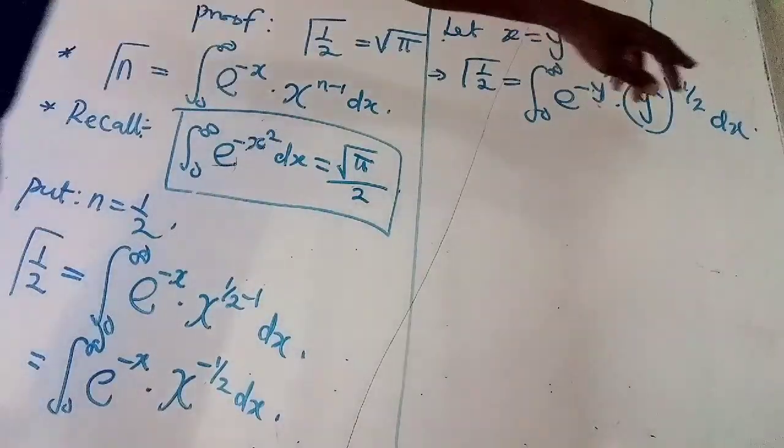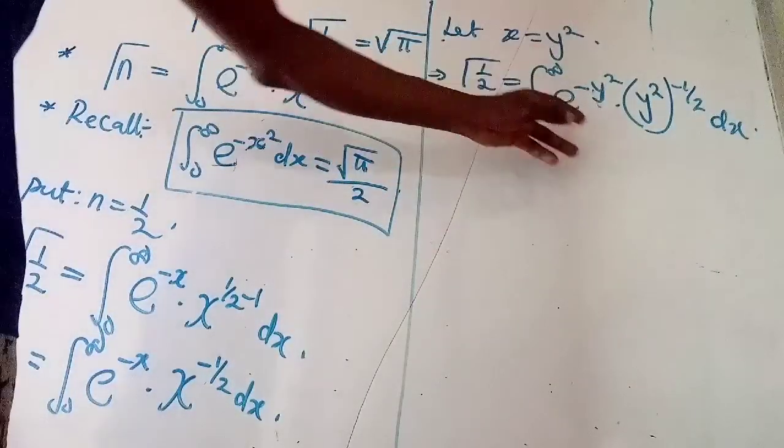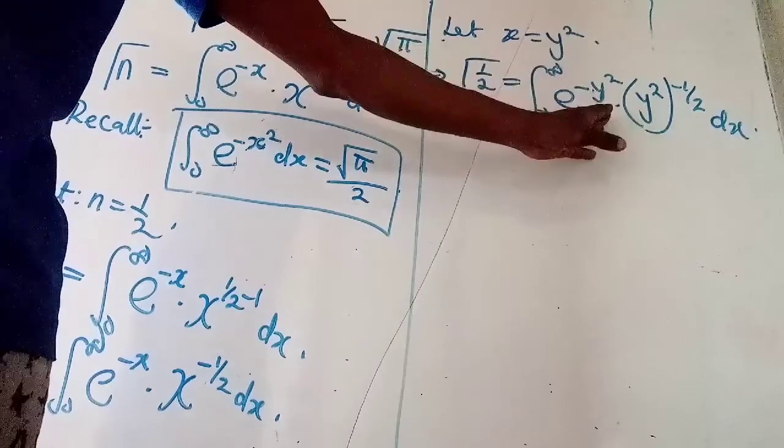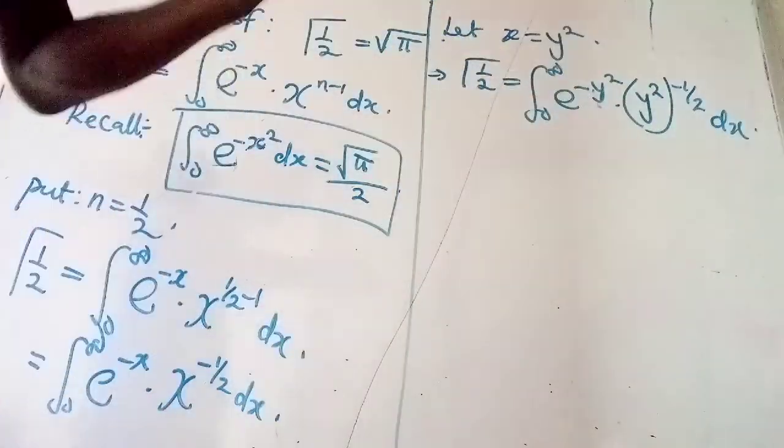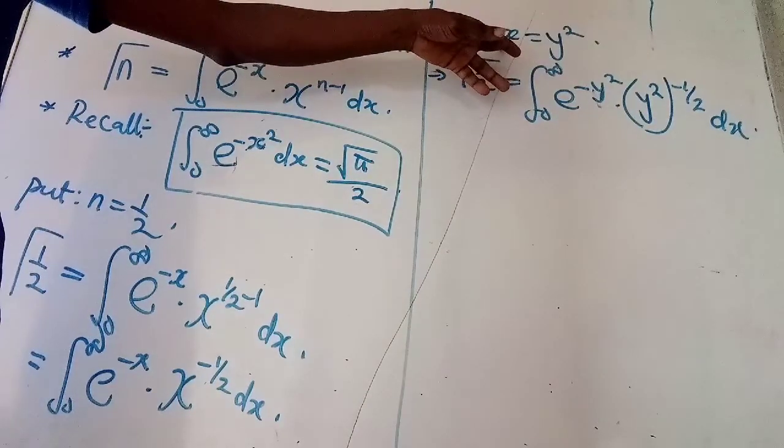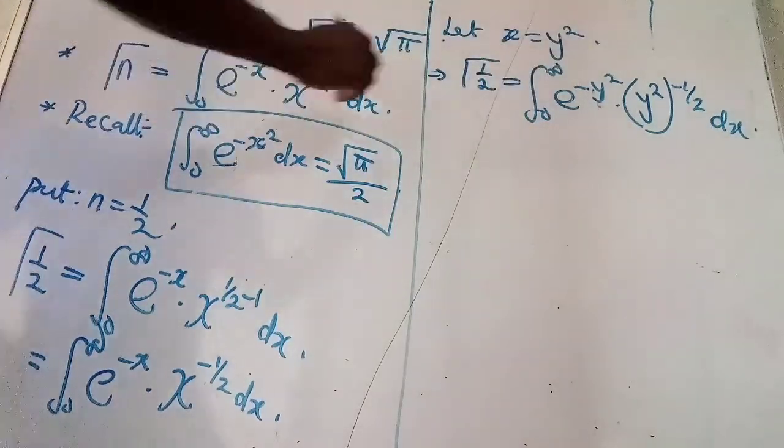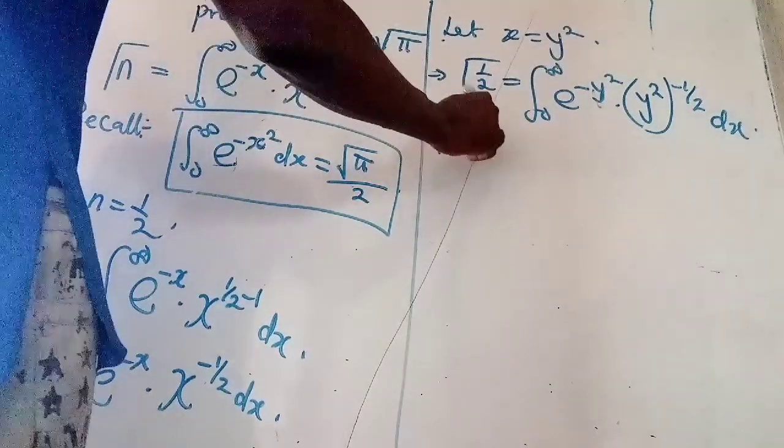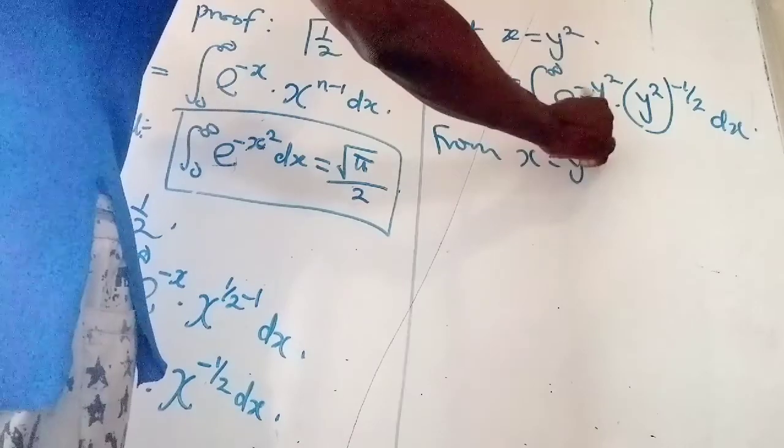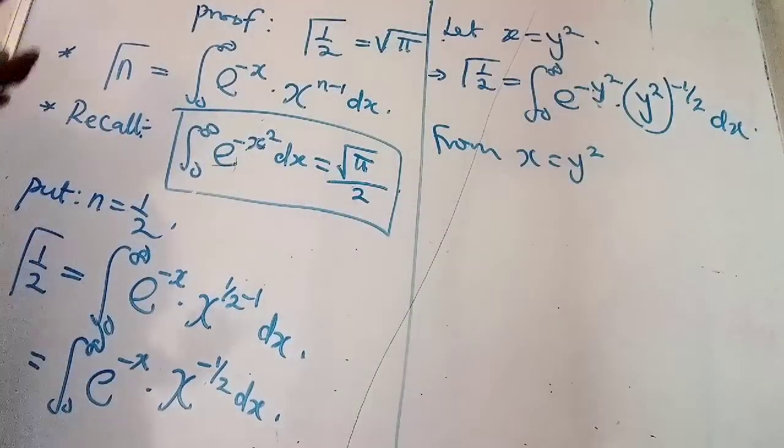Now, I need to get rid of this dx. Why? Because, I am dealing with variable y. I am not dealing with variable x. How do I do that? I will go back to my substitution here. Let x equals to y squared. From x equals to y squared, I will differentiate. That is the only thing that can bring out dx.